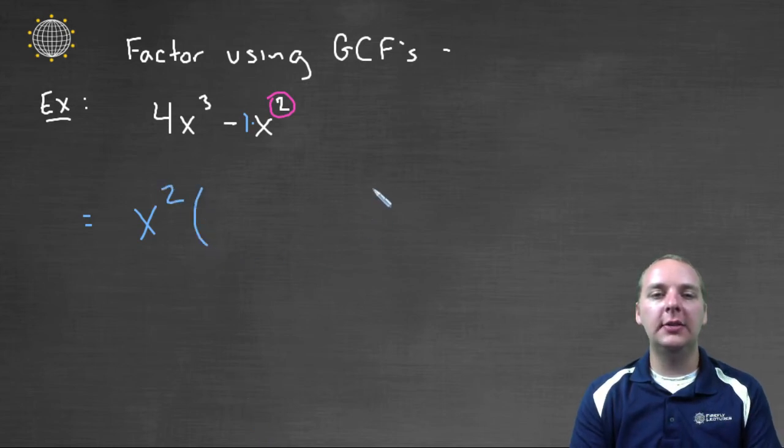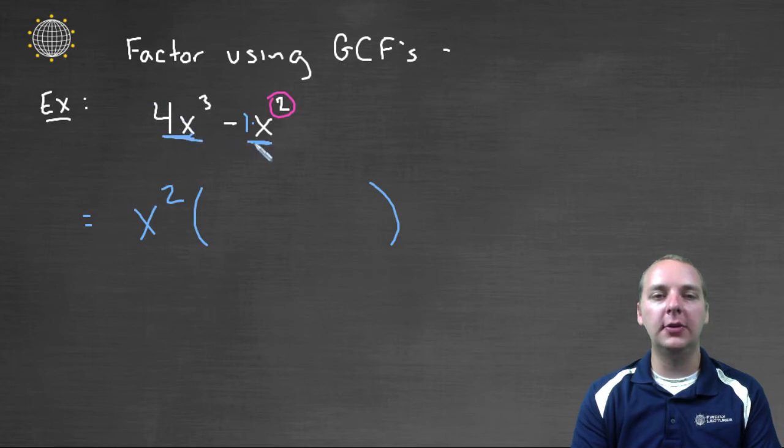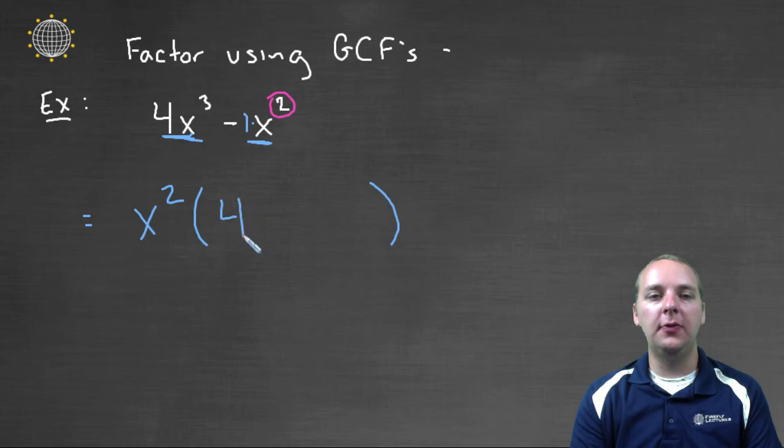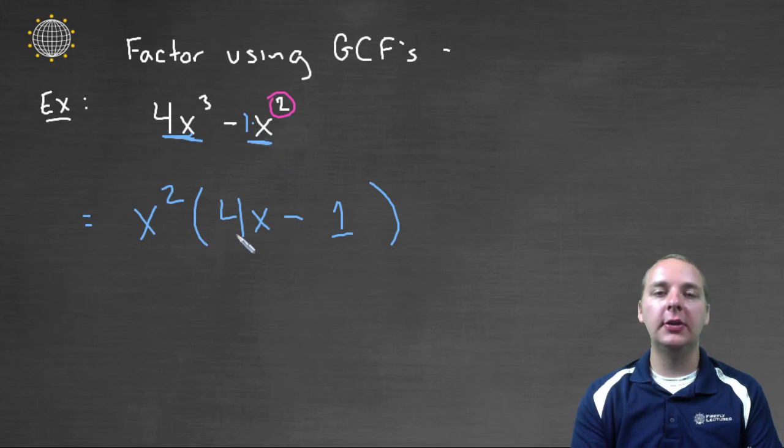And then I'm going to see what's remaining after I pull an x² out of both of these terms here. So x² times what would give us 4x³? Well that would just be 4x. And then this will be a minus. And x² times what would give me x²? x² times 1 is x². And so this will be your final answer, and so we're done with these examples.